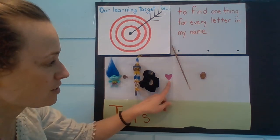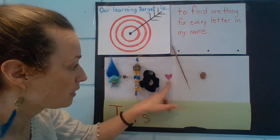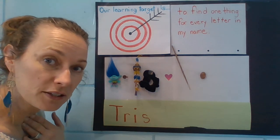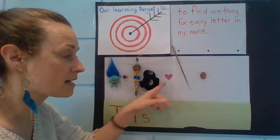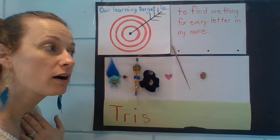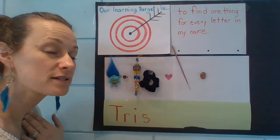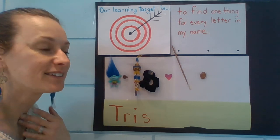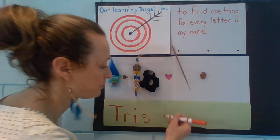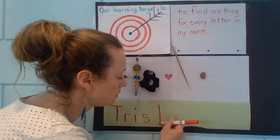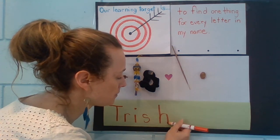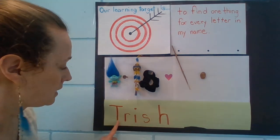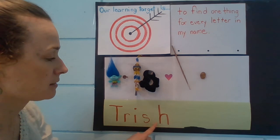The next thing I found was a sticker of a heart. H — do you remember what letter makes that sound? H, like 'horse.' The letter H. The letter H is tall with a bar. T-R-I-S-H.